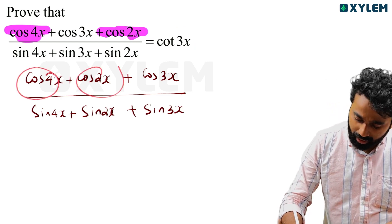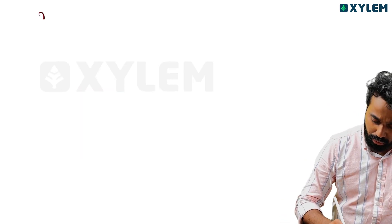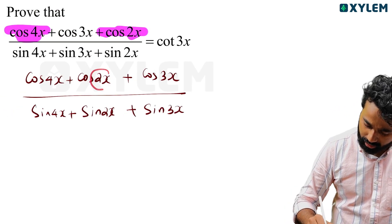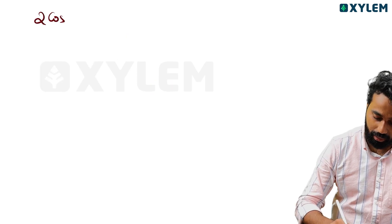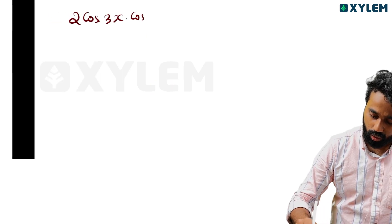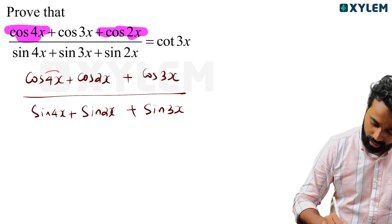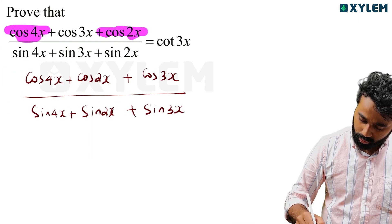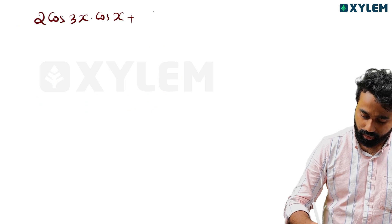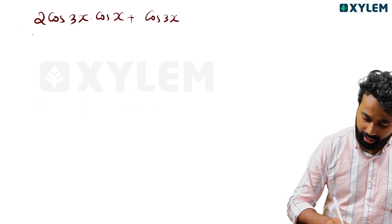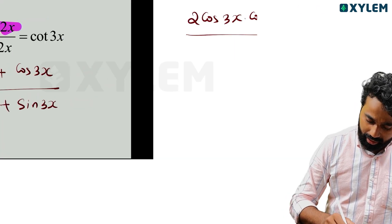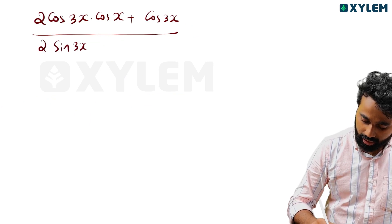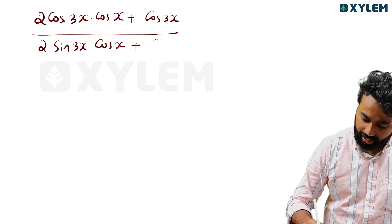The important equations: cos x plus cos y equals 2 cos of x plus y by 2 into cos of x minus y by 2. For cos 4x plus cos 2x: 2 cos 3x into cos x. And for sin x plus sin y: 2 sin of x plus y by 2 into cos of x minus y by 2. For sin 4x plus sin 2x: 2 sin 3x into cos x, plus sin 3x.